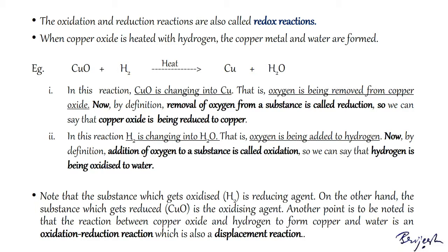For example, when copper oxide is heated with hydrogen, copper metal and water are formed. In this reaction, copper oxide is changing into copper — that is, oxygen is being removed from copper oxide.